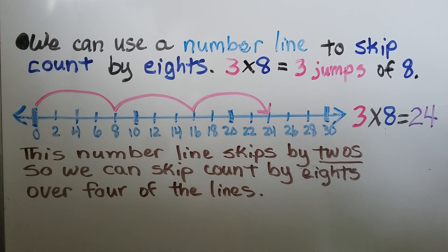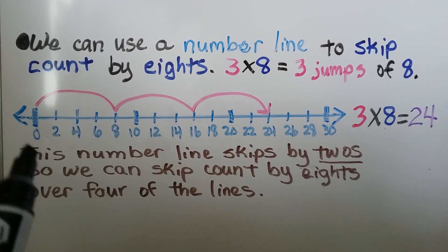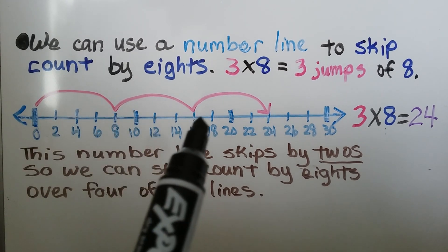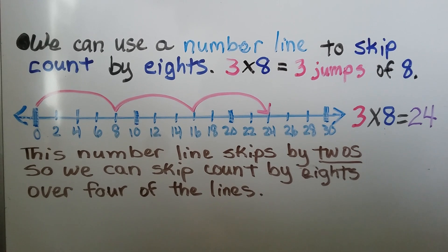We can use a number line to skip count by 8s. 3 times 8 is equal to 3 jumps of 8. We jump 8 to 16 to 24, so 3 times 8 is equal to 24.